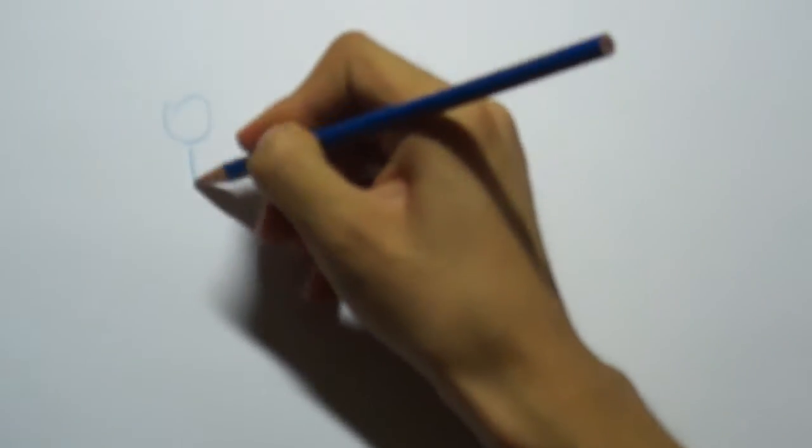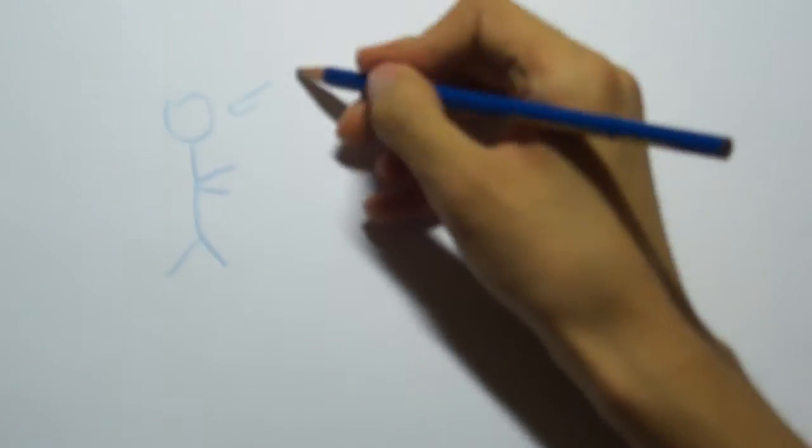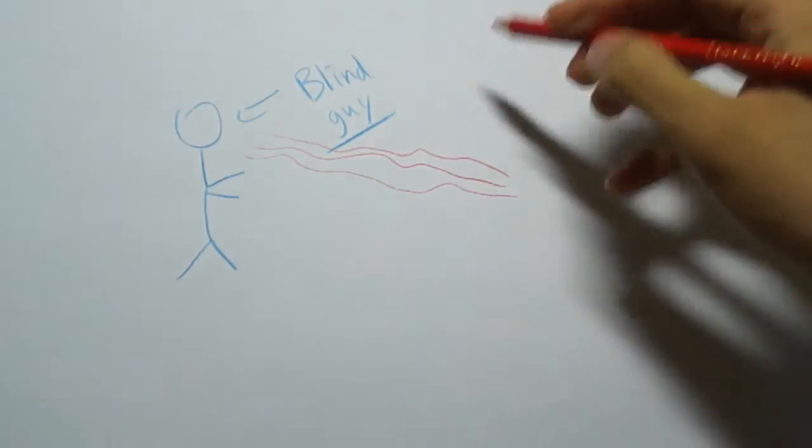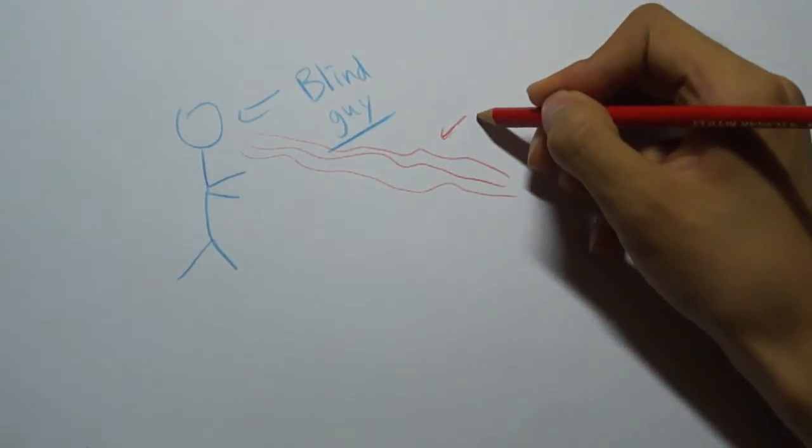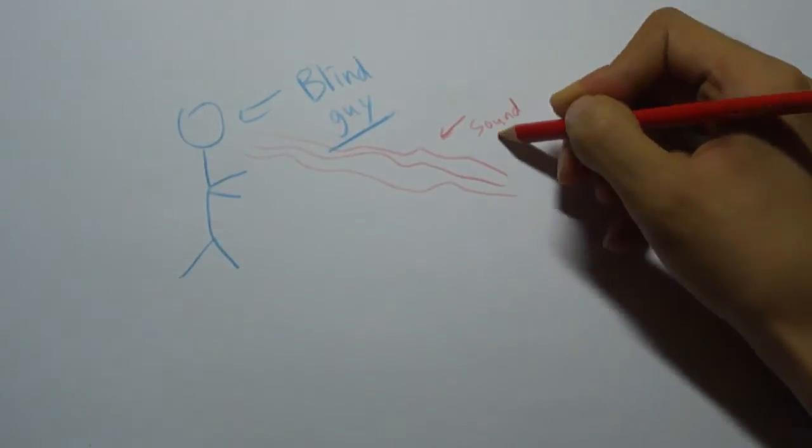Echolocation is also used by some humans. Daniel Kish lost his eyes at the age of 13 months because of retinal cancer. He learned to make palatal clicks with his tongue when he was still a child, and now he trains other blind people in the use of echolocation in what he calls perceptual mobility.